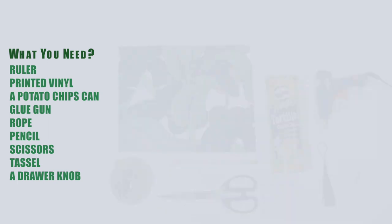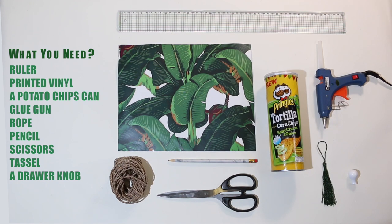You're gonna need a ruler, a sheet of printed vinyl, a potato chips can, glue gun, rope, a pencil, scissors, a tassel and a drawer knob.